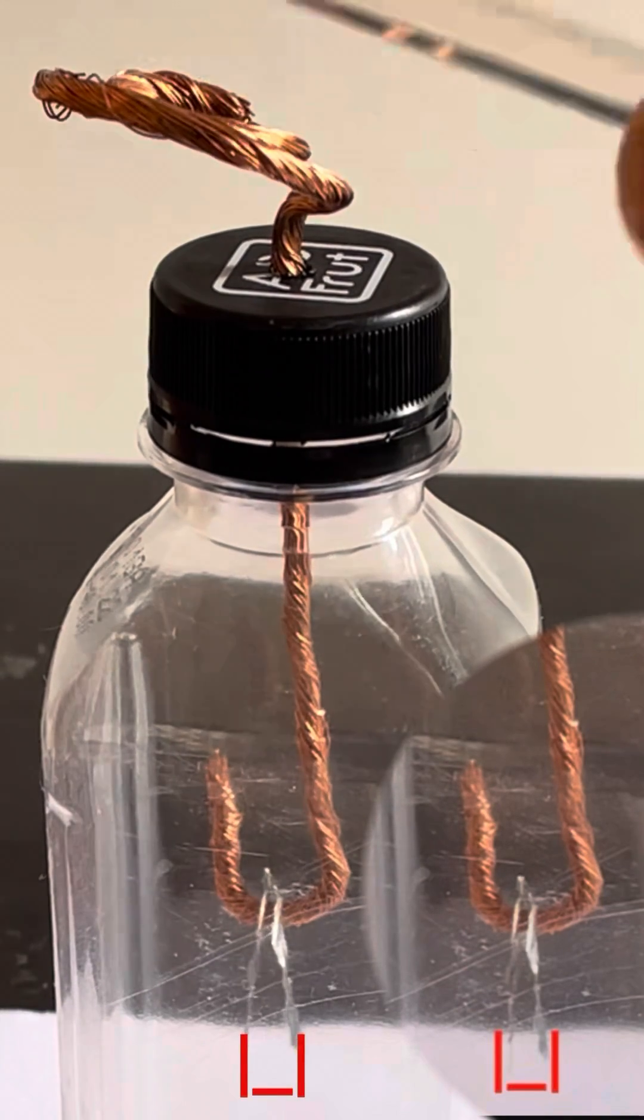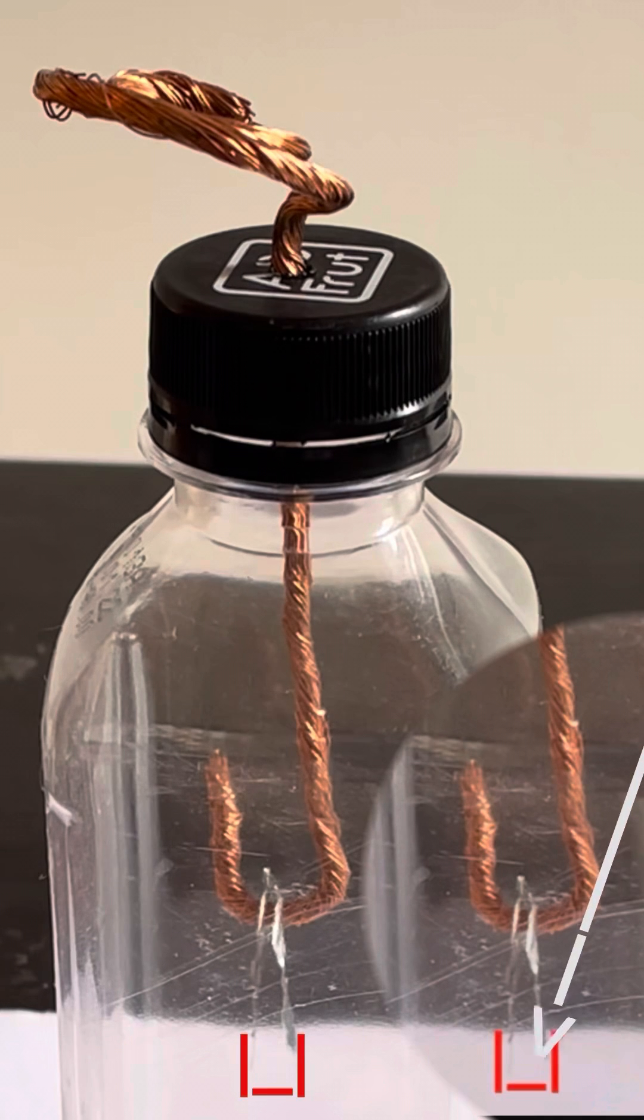Before charging by conduction, the leaves of the electroscope are within the box.